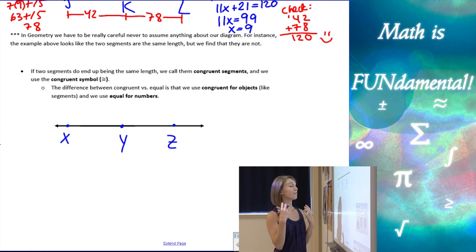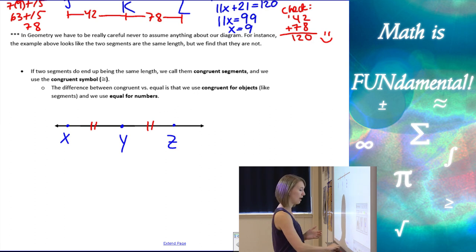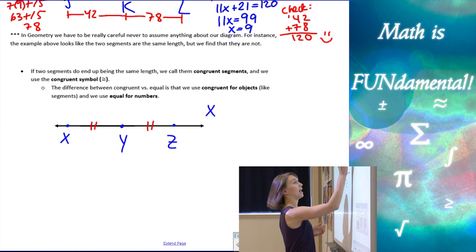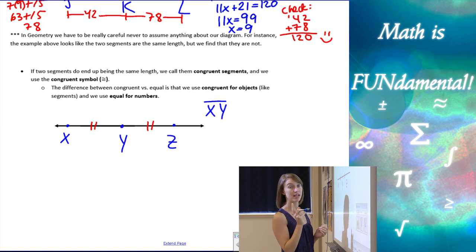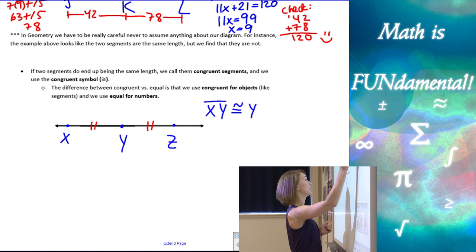Now, if they do end up being equal, equal lengths, we say that the segments are congruent. So that's another vocab term for you. And congruent segments are symbolized with a little dash. If they have a matching dash, that means they're the same length. They can have one dash. They could have two dashes. As long as they match, that means they're the same length. And we would write that segment XY, remember your segment symbol, is congruent.